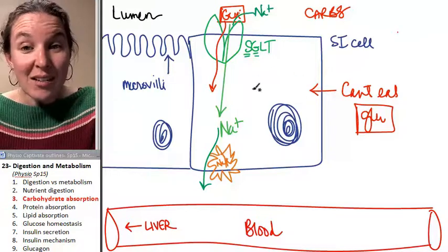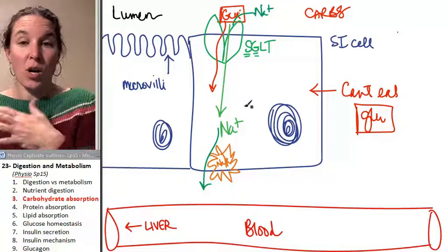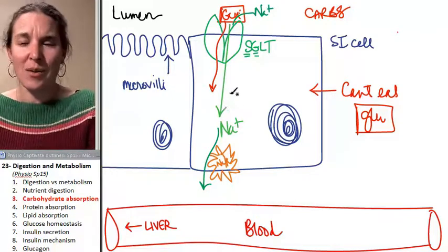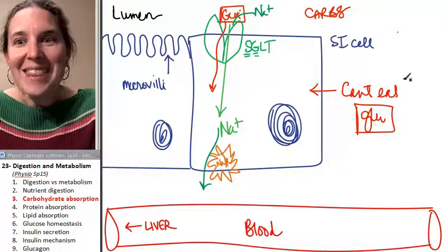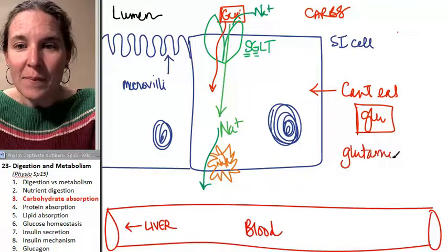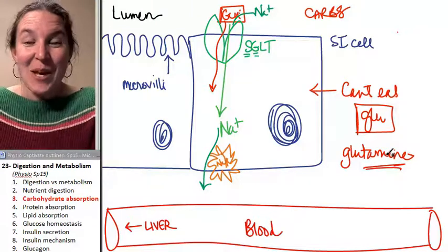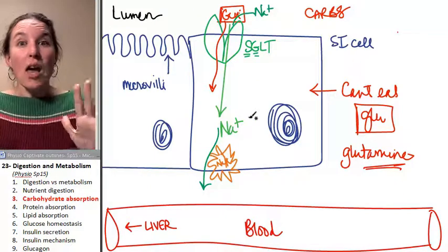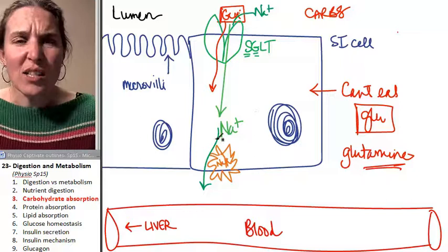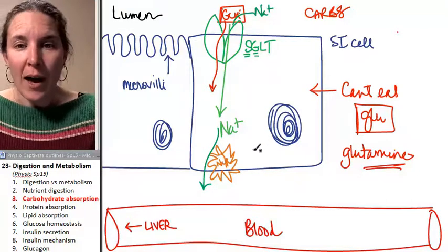So, these cells can't eat the glucose, which means they're not going to try and keep it for themselves. They're like, dude, whatever. The only thing that they can eat is something called glutamine. That's how they get their energy. So, the fact that they can't eat it, we're going to build up a huge concentration of glucose in this cell. That's not the goal. What are you going to do about that?